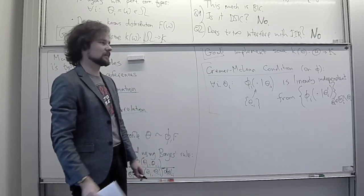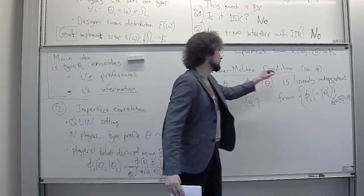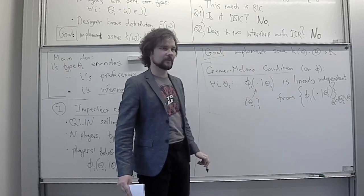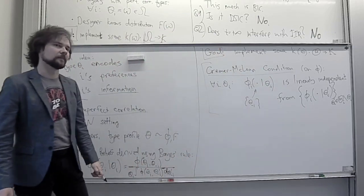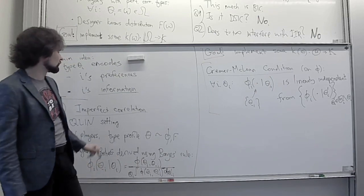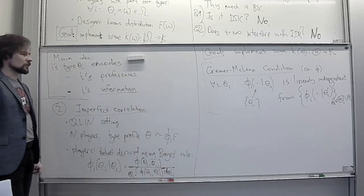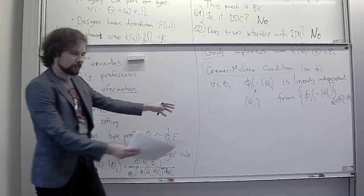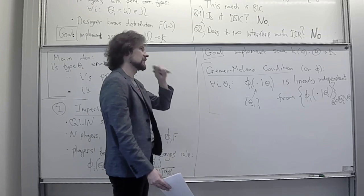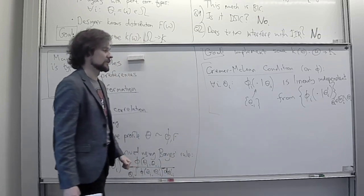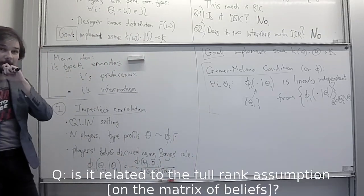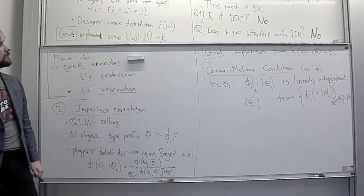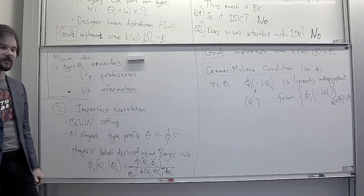It's a pretty strong assumption. It is related to full rank requirements — specifically a full rank requirement for a matrix composed of beliefs of players. The idea is that even if this condition does not hold in the whole model, even if you cannot fully identify the type of player i just based on their beliefs about other players' types, you can still extract this aspect of information as a first step toward implementation.